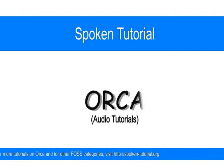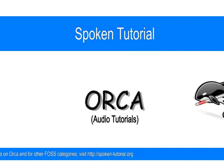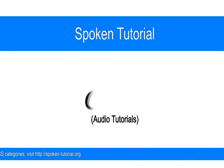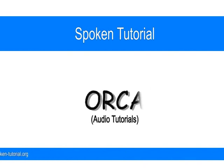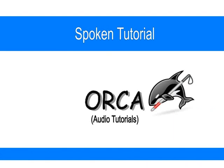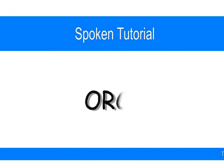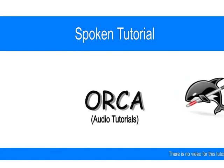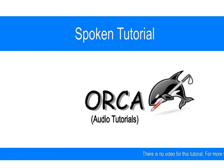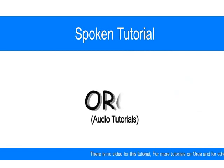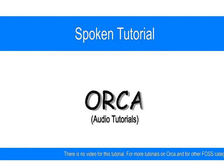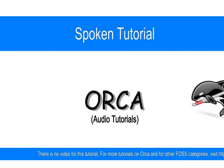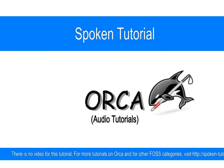We type the first line: 'I use Ubuntu GNU slash Linux.' Orca echoes each character as it is typed. Hit Enter for the next line. Orca reads back: 'I use Ubuntu GNU slash Linux.'